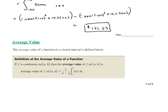To find an average, you add everything up and divide by the number of items. That works for finite data like test scores, but what about a continuous function? How do you find the average value of something with an infinite number of values? Integration is essentially adding up a bunch of function values.